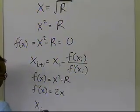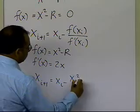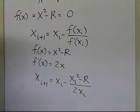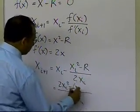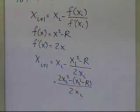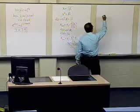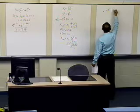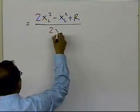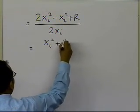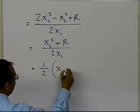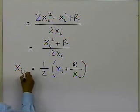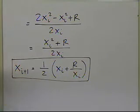Substituting in the Newton-Raphson formula gives x of i+1 equals x of i minus (x of i squared minus r) divided by (2 x of i). Simplifying: the numerator becomes 2 x of i squared minus x of i squared plus r, which reduces to x of i squared plus r, all divided by 2 x of i. Further simplification gives x of i+1 equals one-half times (x of i plus r divided by x of i). That is the simplified Newton-Raphson formula for finding the square root of r.